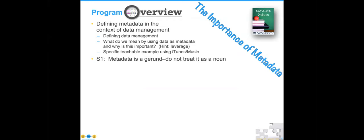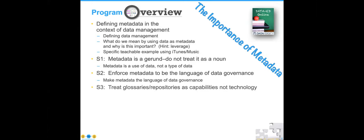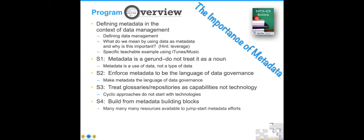We're going to look at four specific strategies. First, metadata is a gerund — do not treat it as a noun. That is, metadata is a use of data rather than a type of data. Second, enforce metadata to be the language of data governance. Third, treat glossaries and repositories as capabilities, not as technology. Cyclical approaches tend to start out so that the organization can crawl, walk, and run their way towards success. And the fourth is that there are many good first-piece building blocks already out there.